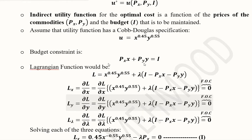This is the Lagrangian function, where the utility needs to be maximized subject to the budget constraint. We have inverted the constraint by keeping income I on the left-hand side and shifting the two expenditure terms — expenditure on X and expenditure on Y — to the other side. Lambda here is the Lagrangian multiplier.